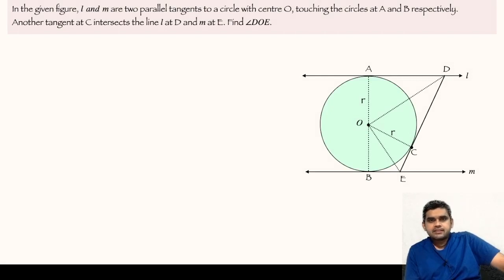In the given figure, lines L and M are parallel to each other, and they are tangent to the given circle with center at O, touching the circle at points A and B respectively. There is another tangent DE touching the circle at point C. We are asked to find the value of angle DOE.